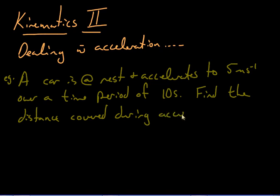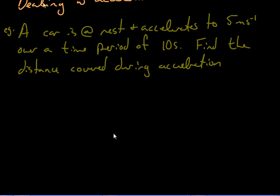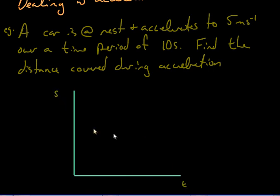I think the easiest way to understand what we're dealing with here is to actually graph out what this would look like. So we'll start with the position-time graph — technically displacement is the change in position, but you often hear 'displacement-time graph.' If we look at this, you would get a smooth curve going like this.